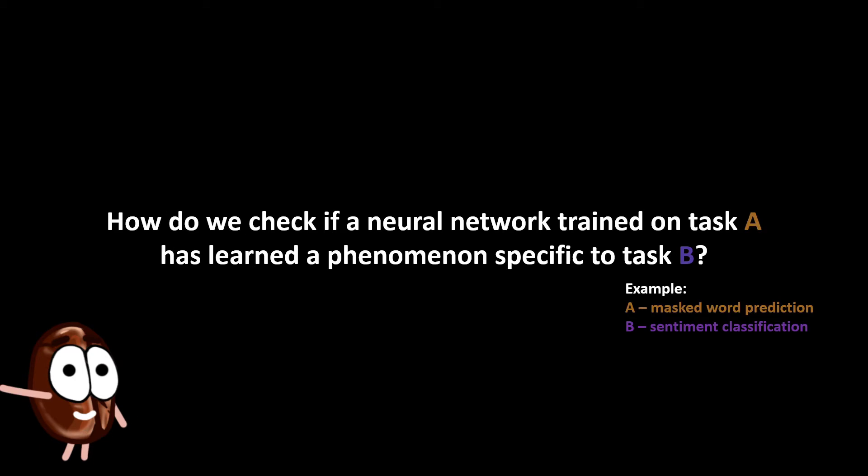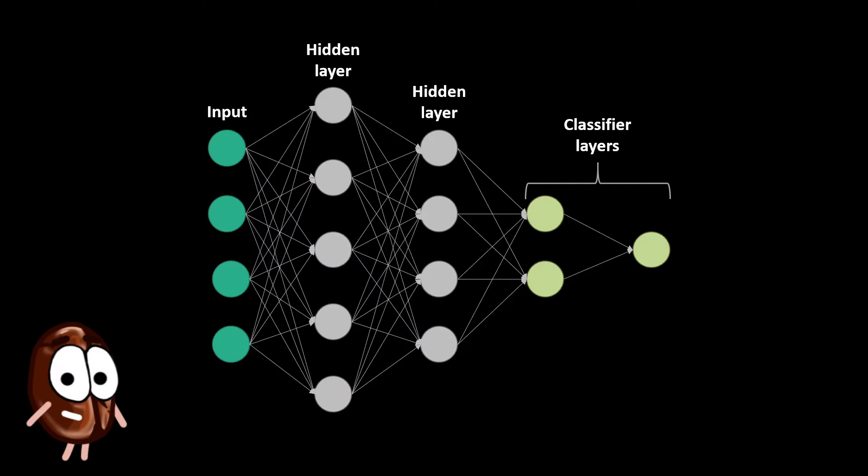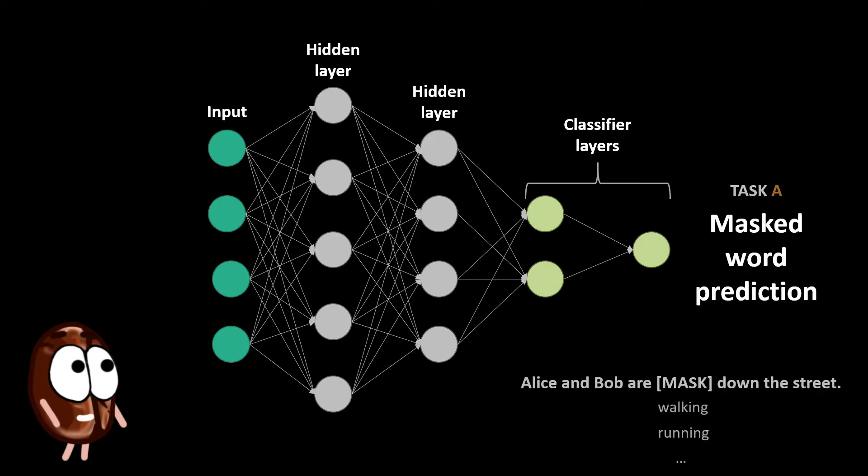So, let's get back to the original question: How do we check if a neural network trained on task A has learned a phenomenon specific to task B? We start with a neural network, supposing it was trained on large amounts of training data like Wikipedia, where it reads text and has to predict masked words.